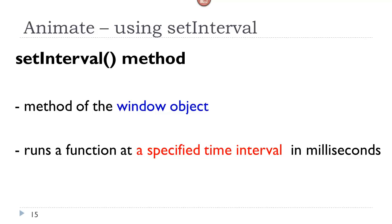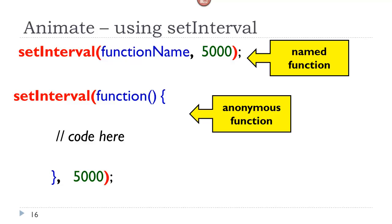The setInterval method is commonly used in creating an animation effect that repeats over and over again. It is actually a method of the window object, and it runs a function at a specified time interval — always using milliseconds. The syntax can be used two ways: calling a named function, or using an anonymous function. In the second block of code, we have the anonymous function with 5000, which means the code inside will be called every five seconds.